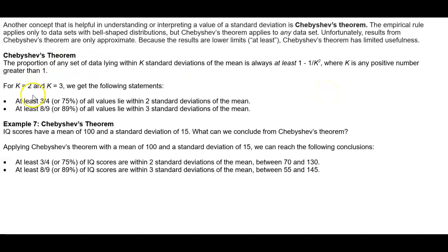For K equals 2 and K equals 3, we would get the following statements. If we said 1 minus 1 over 2 squared, that means that we would get at least 3 fourths, or 75%, of all values that lie within two standard deviations of the mean.